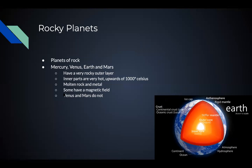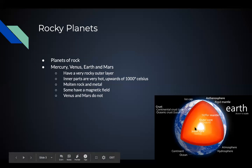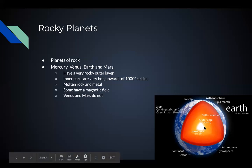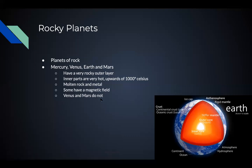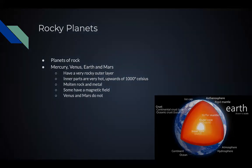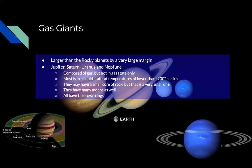Molten rock — is it made of magma? Yes, that is the term for molten rock. The inner parts of all the rocky planets are magma and molten metal. Keep in mind that Venus and Mars do not have a magnetic field. Only Earth and Mercury do.